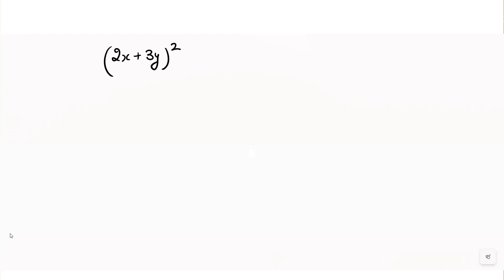Hello everyone, today we will learn how to use algebraic identities to expand algebraic expressions. If you like the video, hit the like and subscribe button and share my channel link with your friends, and also write a comment in the comment section. So here the question is: (2x + 3y) whole square. How can we expand this algebraic expression using an algebraic identity?